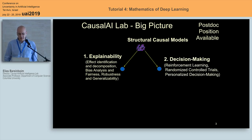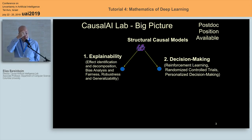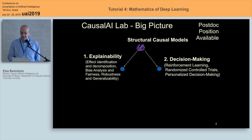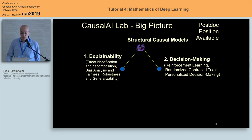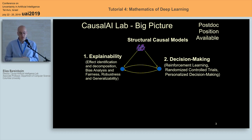The other side of the structural causal model we're interested in is the decision-making part. Maybe we don't care about understanding — the first side is about what people like to say, opening nature's black box. We don't care about understanding; we're pragmatic and just trying to optimize some measure. This is the decision-making part. One that is very close to us is the reinforcement learning part, but you can also have randomized control trials in science or biomedical science, or problems of personalized decision-making. As much understanding as you have about the system should buy some mileage or allow you to do more efficient decision-making.